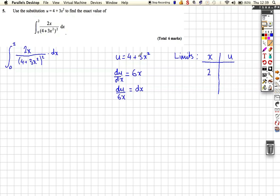Well, it's 4 plus 3 lots of 2 squared, or 2 squared is 4, that's 12, plus 4 is 16. So the limit of 2 goes to 16, and the limit of 0 for x means that this whole expression is 0, so the limits are going to change from 4 to 16 rather than 0 to 2.